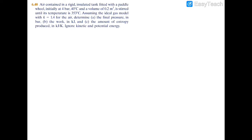In this example, we have air enclosed in a rigid insulated tank fitted with a paddle wheel. The initial pressure, temperature, and volume of the air are given as 4 bar, 40 degrees Celsius, and 0.2 cubic meters. We're going to stir that air with the paddle wheel, and it will heat up to 353 degrees Celsius. We assume the ideal gas model with a specific heat capacity ratio of 1.4 for the air. We're asked to determine the final pressure in bar, the work in kilojoules, and the amount of entropy produced in kilojoules per Kelvin.